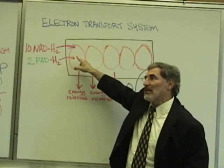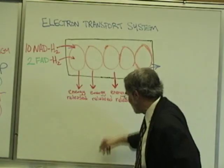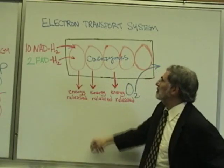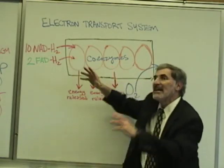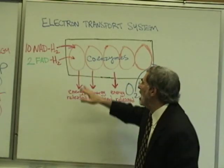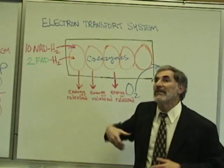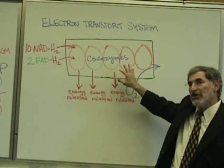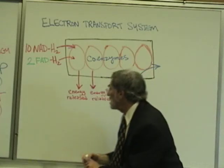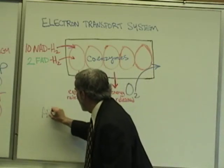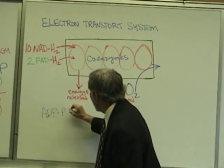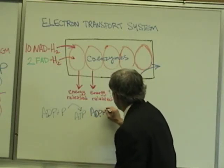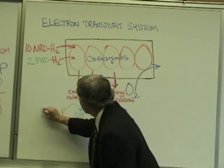As these hot potato hydrogen atoms and electrons are transferred from one coenzyme to the next — these coenzymes, vitamins and minerals — just like the hot potato was giving off heat and cooling down, these hot potato hydrogen atoms are giving off energy. Energy is being released as these hydrogen atoms are transferred from one coenzyme to the next. This energy that is being released is used to join an ADP and a phosphate together to form ATP.